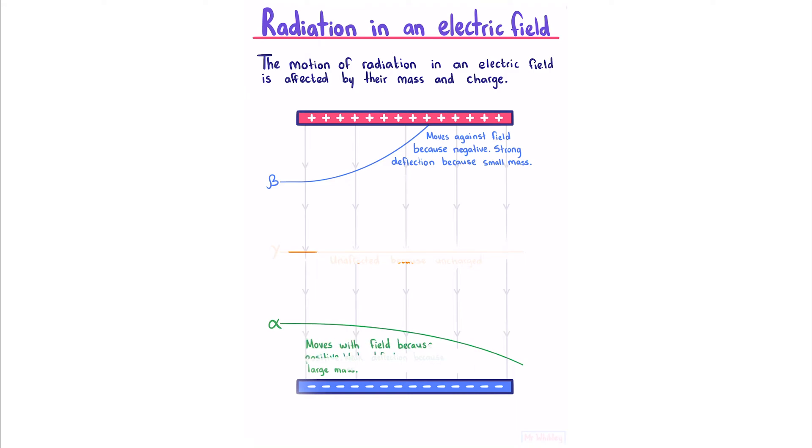Our beta radiation moves against the field because it's negative, and has a strong deflection because it has a small mass. Alpha radiation moves with the field because it's positive, and has a weak deflection because of its large mass. Gamma radiation is unaffected because it's uncharged.